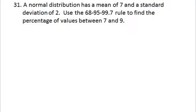A normal distribution has a mean of 7 and a standard deviation of 2. Use the 68-95-99.7 rule to find the percentage of values between 7 and 9. The 68 means 68% of values lie within one standard deviation of the mean; 95 means 95% lie within two standard deviations; and 99.7 means 99.7% lie within three standard deviations.